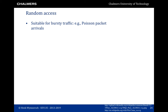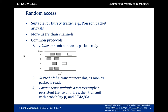Not all networks are cellular. There is also random access, used for instance in Wi-Fi, suitable for bursty traffic and when there are more users than channels. Under Aloha, a user transmits a packet as soon as it has one, but when two users transmit simultaneously, a collision occurs. In slotted Aloha, performance is improved by using slotted time — when a packet is ready, the user waits for the next time slot before transmitting.